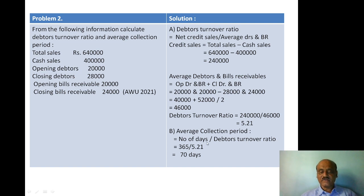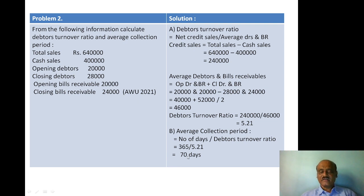Average collection period is equal to number of days in a year divided by debtor turnover ratio. Number of days in a year is 365 divided by debtor turnover ratio of 5.21, which gives 70 days. So the average collection period is 70 days, and the debtor turnover ratio calculation gives approximately 5 times.